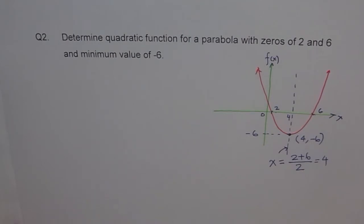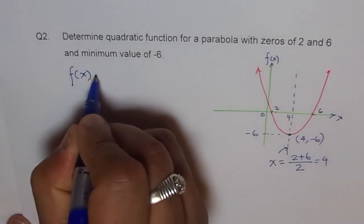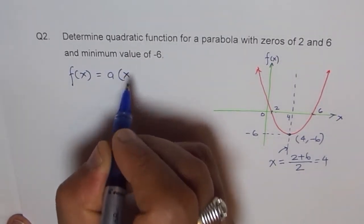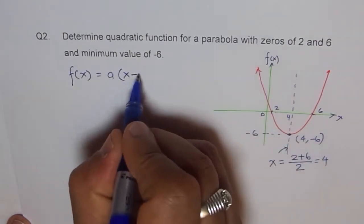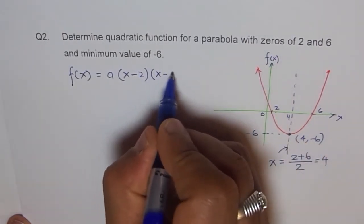Let's move on from here and hope to get the right answer. So f(x) can be written as a times (x - 2), and the other one is (x - 6).